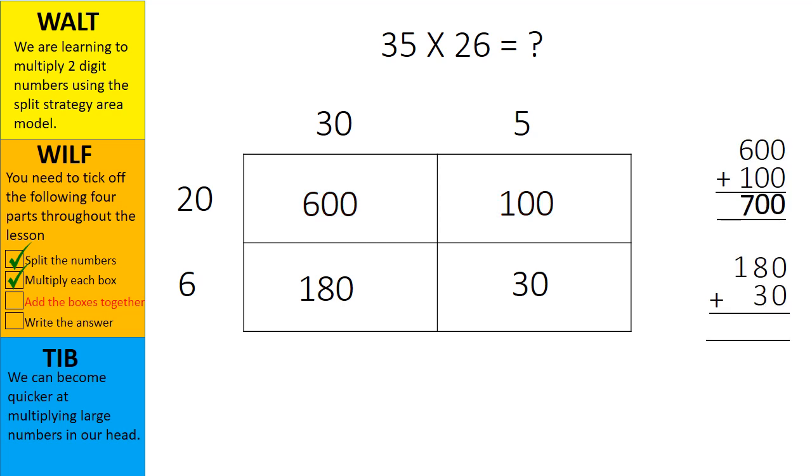Now to the bottom two boxes, 180 plus 30. Again I'll start in the ones place, 0 plus 0. This equals 0. I'll now move into the tens placeholder. 8 tens plus 3 tens. This equals 11 tens.